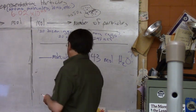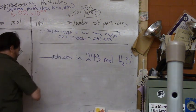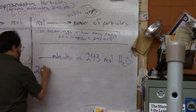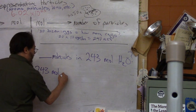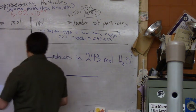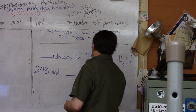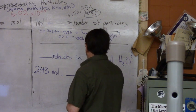So you'll start with your 2.43 moles and you're going to multiply times your conversion factor. In this case, when you look at them again, you want moles on the top and molecules...